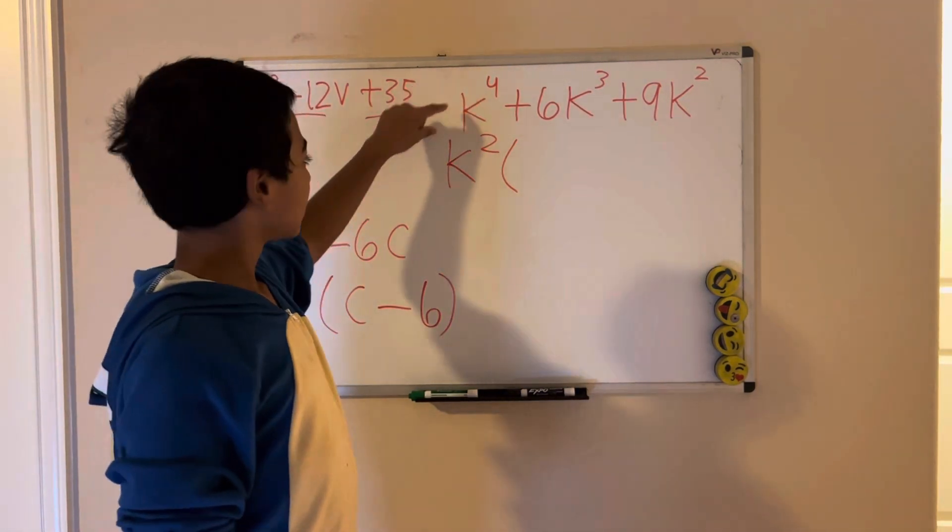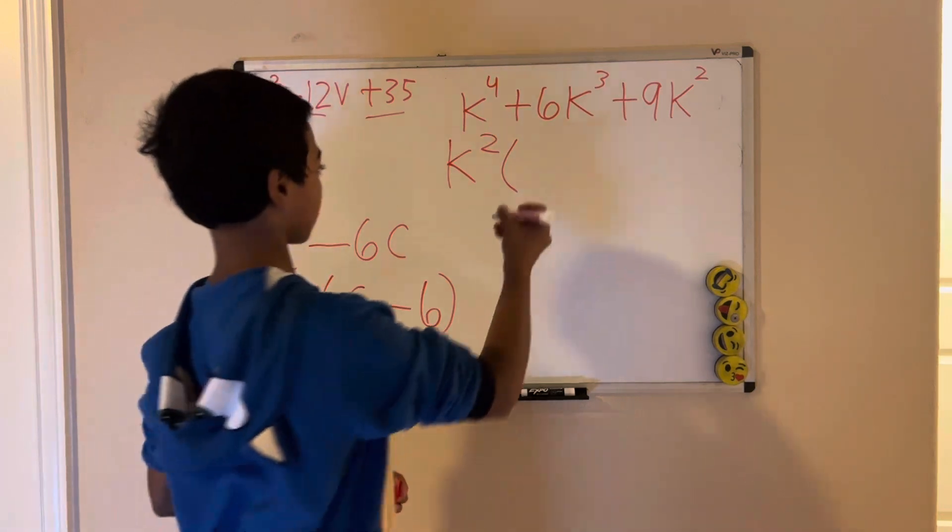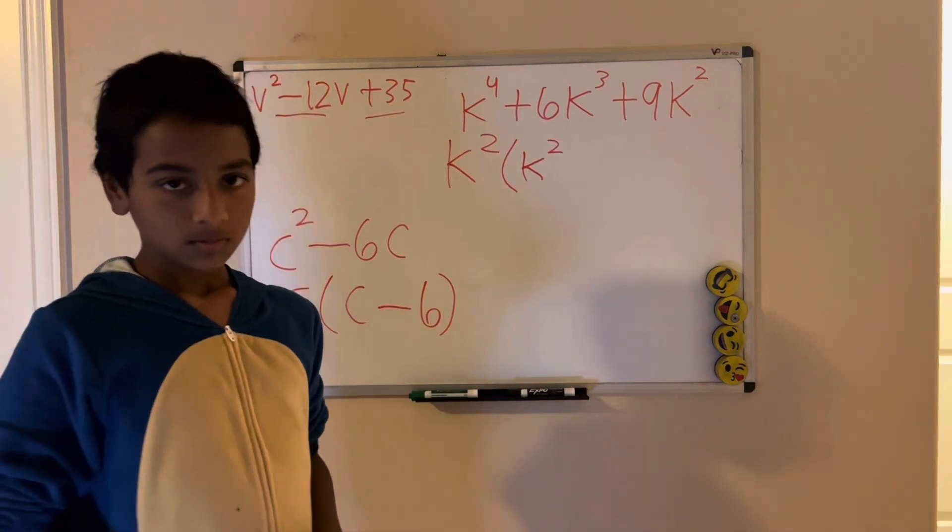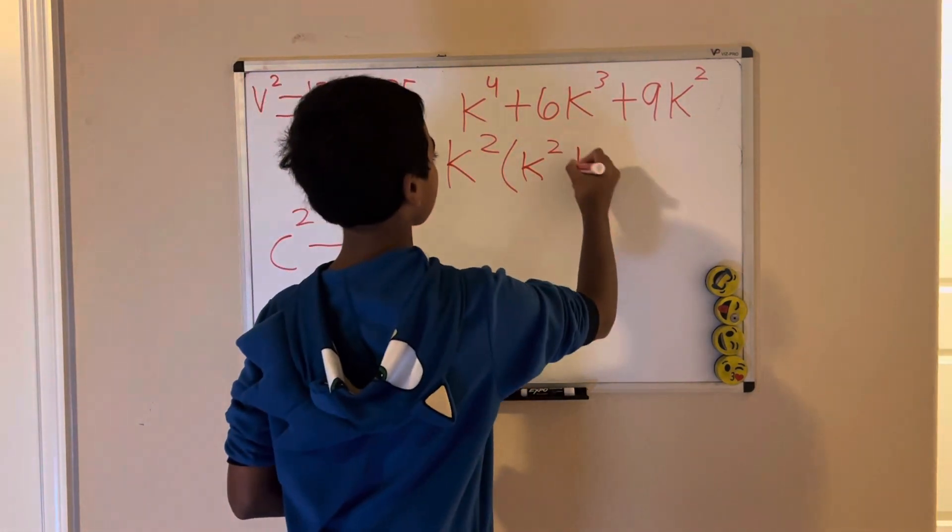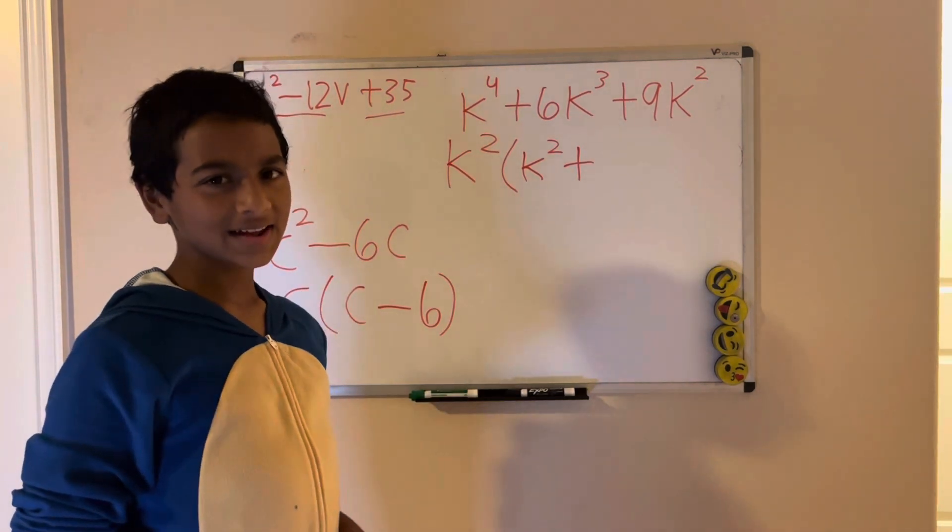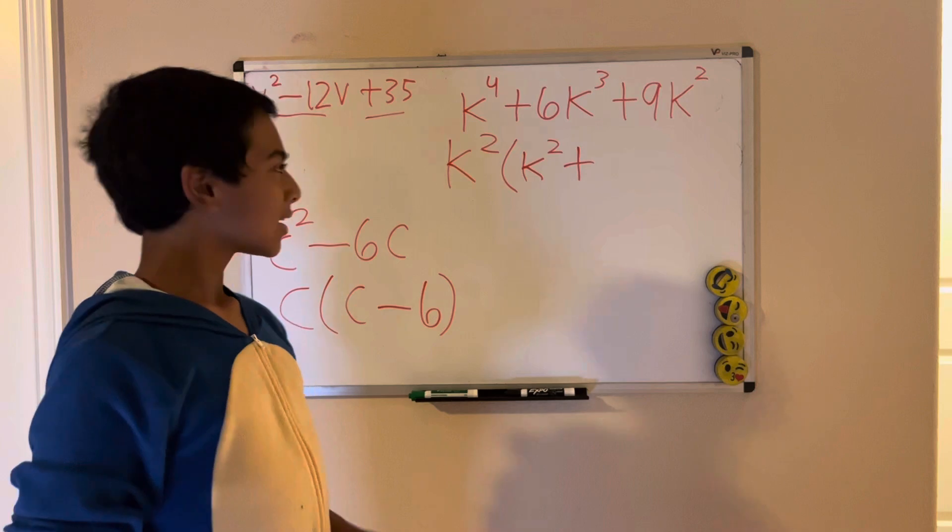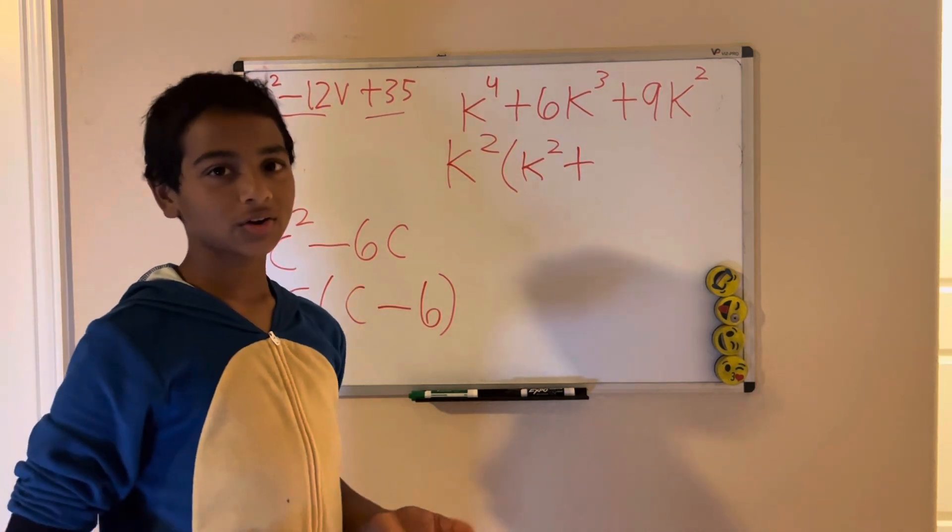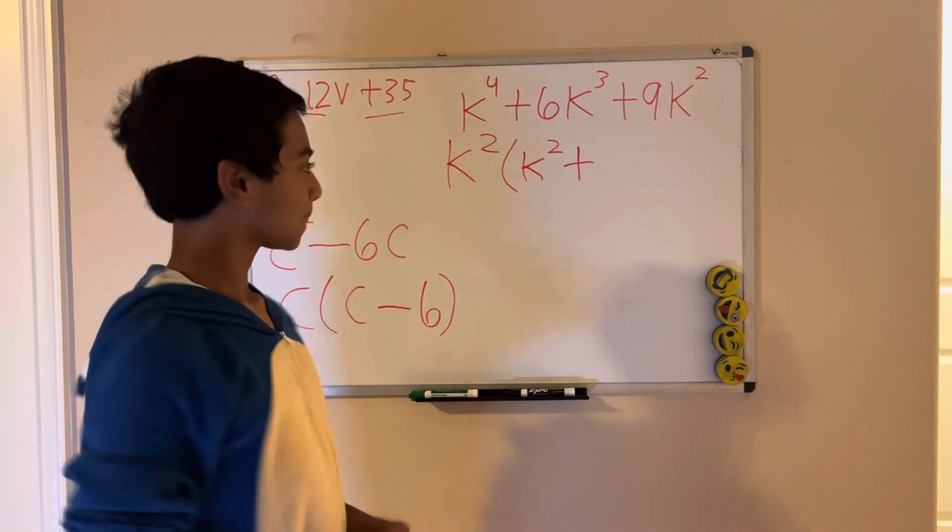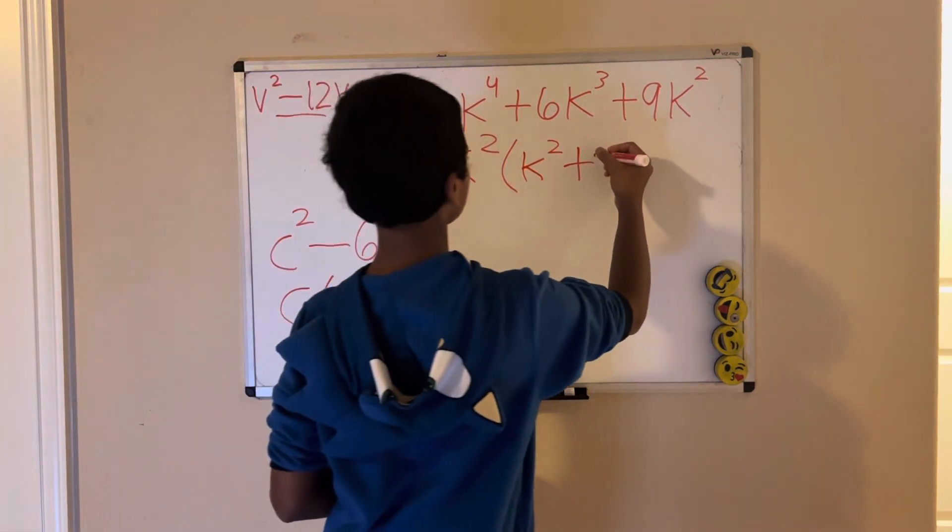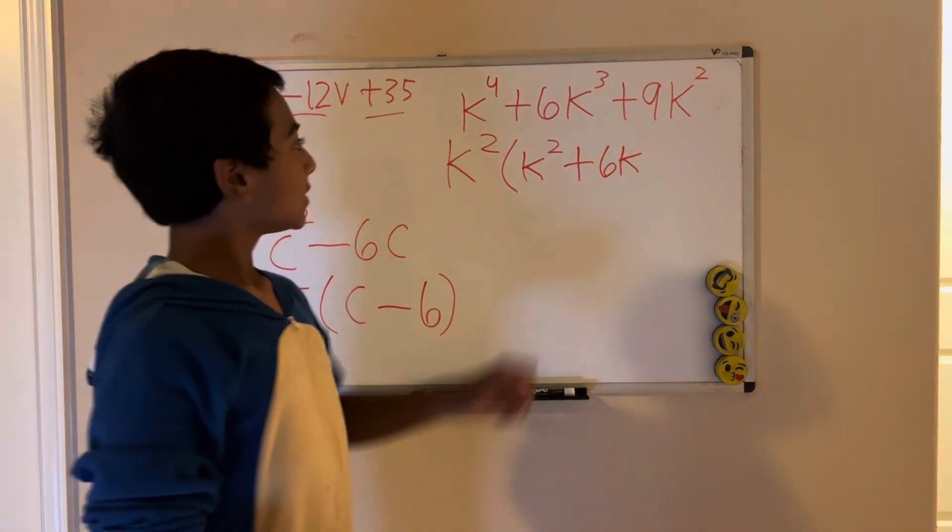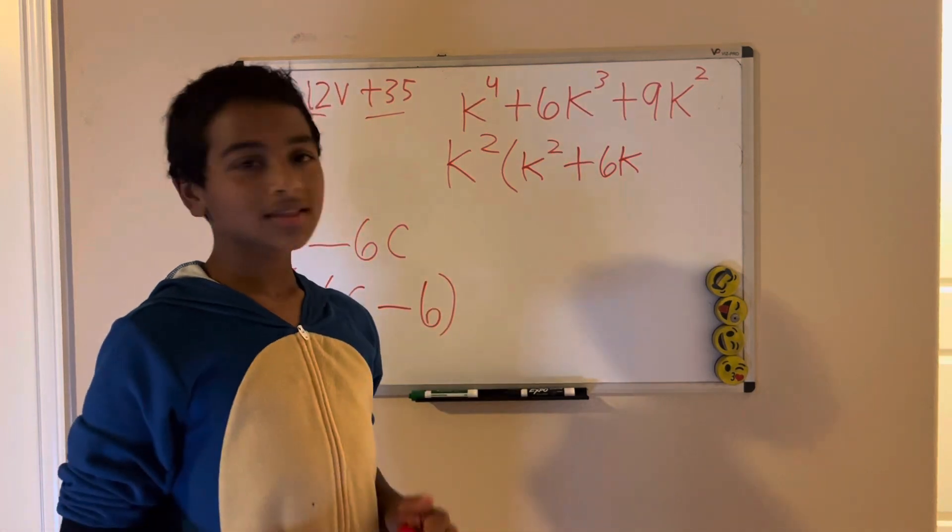K to the fourth divided by k squared is k squared. Plus, 6k cubed divided by k squared is 6k. In other words, 6k times k, which is 6k squared, and 6k squared times k is 6k cubed. 9k squared divided by k squared is 9.